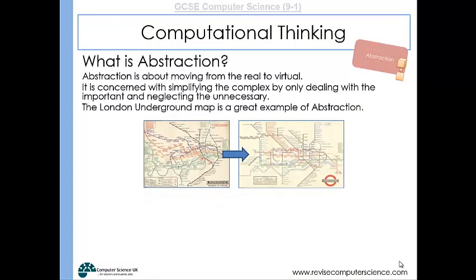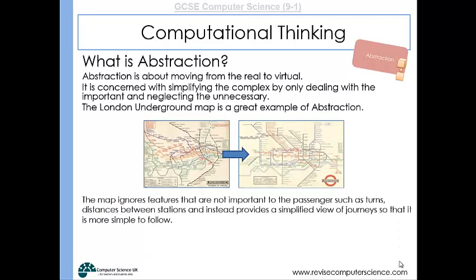So before the modern-day underground map that we all know was produced, we used to have a map for the underground which was actually a lot more realistic in terms of the lengths of the track, the directions of the track, the space between the different stations. But this new map, which is a really good example of abstraction, shows how we've actually simplified things to make things a lot easier to follow and easier to use.